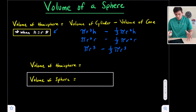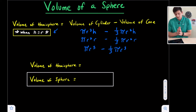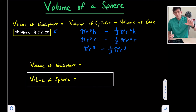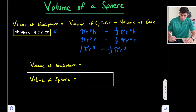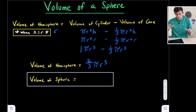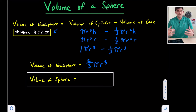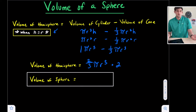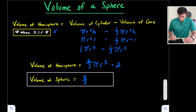We have pi r cubed and one third pi r cubed. If we think about subtracting these, we still have this pi r cubed here, but it would be like we have one minus one third, because there's really a one right there. One minus one third would be two thirds, and we have pi r cubed. So there's our volume of a hemisphere. And since a hemisphere is half of a sphere, if we want to find the volume of the sphere, we just multiply that by two. Two thirds times two would be four thirds pi r cubed.